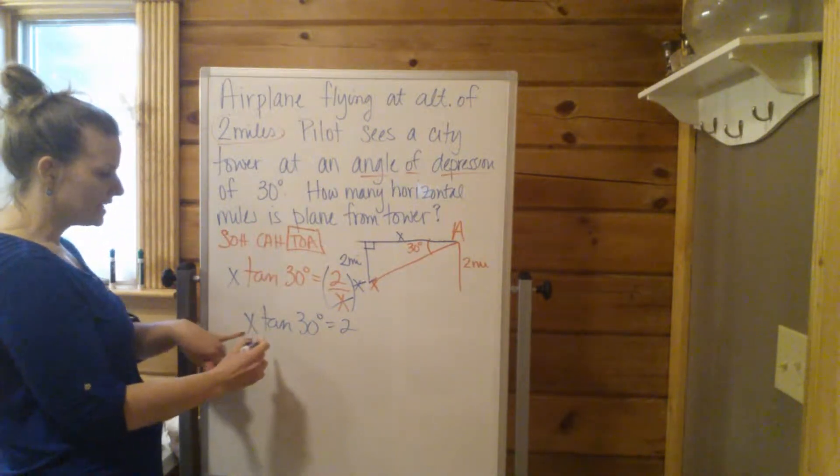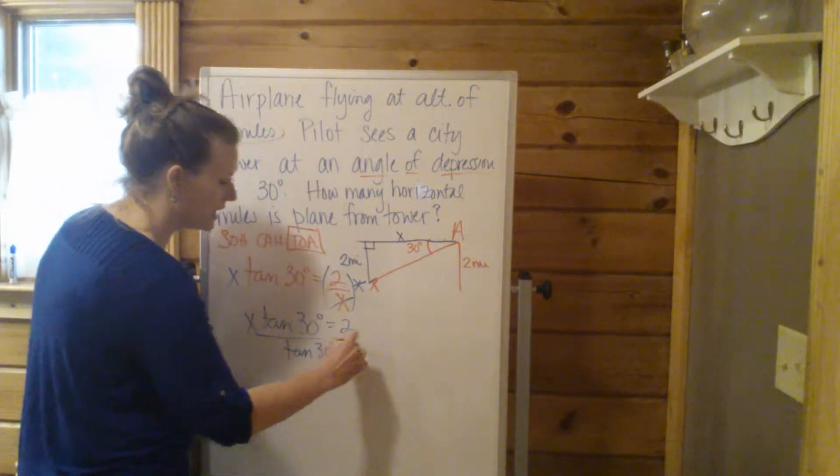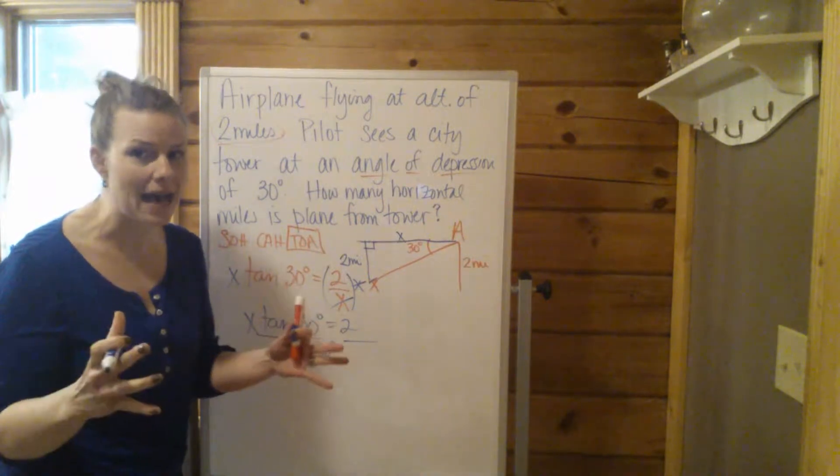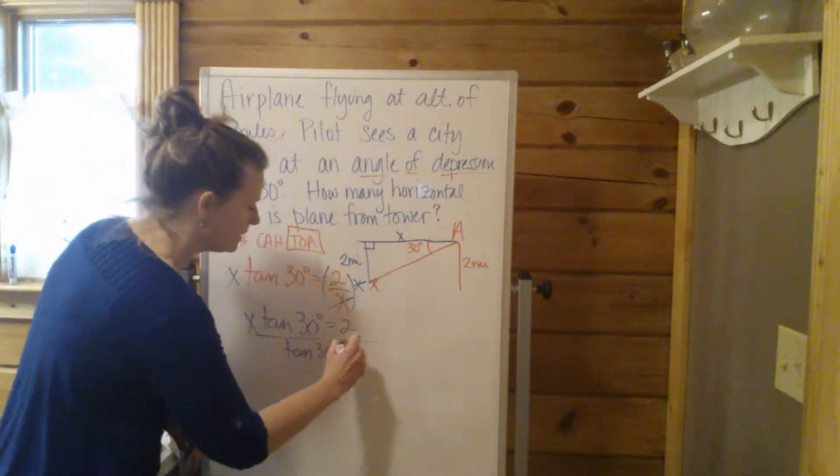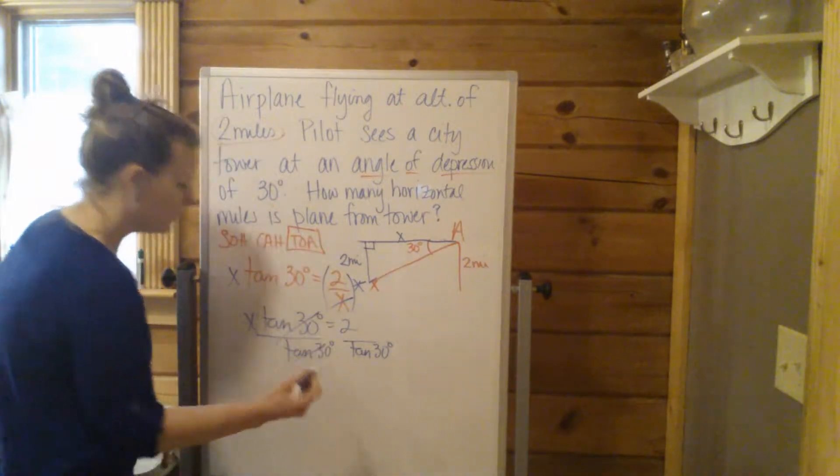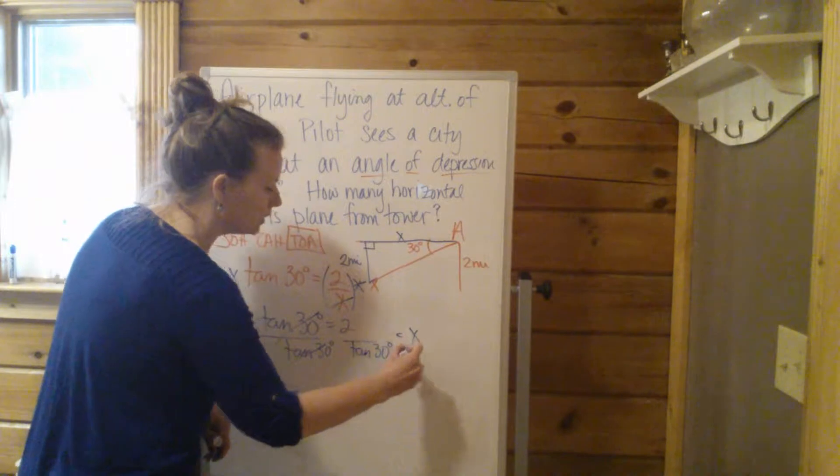Now to get X by itself, we can just divide by the tangent of 30. Make sure you understand that the tangent of 30 is just a number. You can type that in your calculator right now if you want to know what that is. The tangent of 30 is just some number, and actually we'll evaluate it here in a second. But 2 over the tangent of 30 is going to equal X.